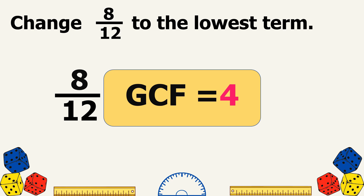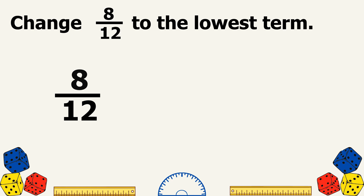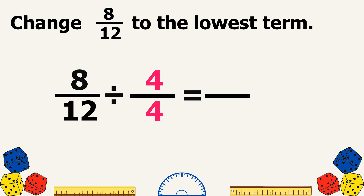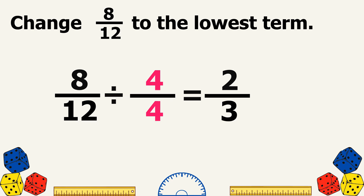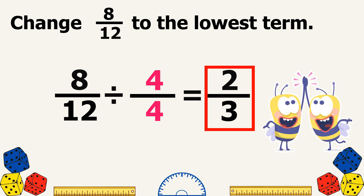Let us divide 8 and 12 by 4. 8 divided by 4 equals 2, and 12 divided by 4 equals 3. So the lowest term of 8 twelfths is 2 thirds.